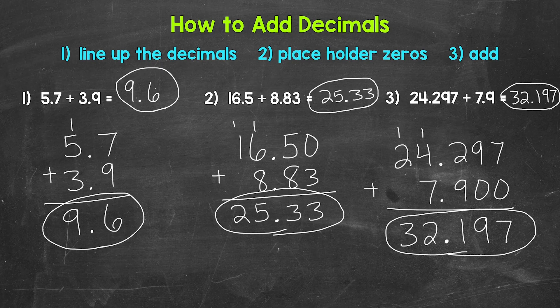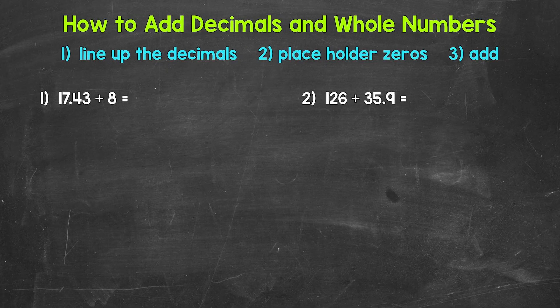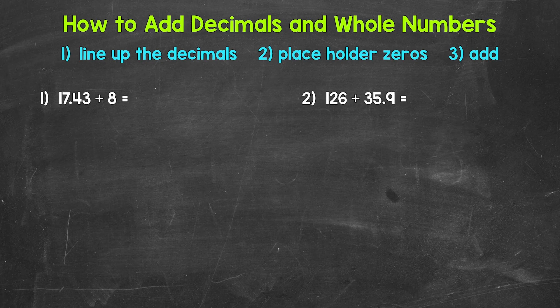Now let's move on to our section on adding decimals and whole numbers. We will either have a decimal plus a whole number or a whole number plus a decimal. Whenever we have an addition problem involving a decimal and a whole number, we use the same steps: line up the decimals, use placeholder zeros, and add.